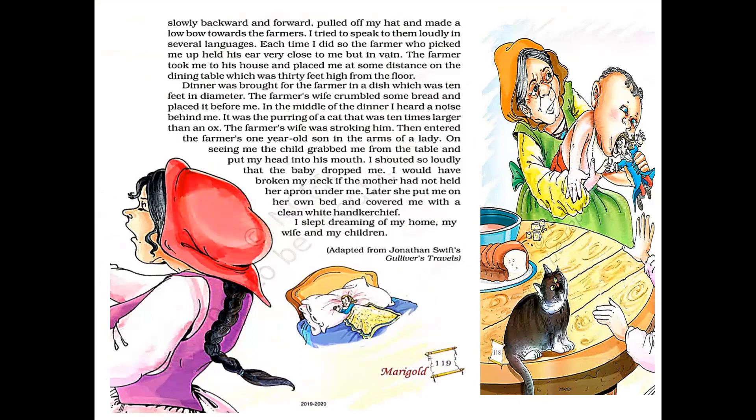Then the dinner was served. The farmer's wife crumbled the bread into pieces and placed it before Gulliver. While he was sitting, he heard a sound of cats. He had a real adventure there. He saw a big cat and also a one-year-old boy who grabbed him and put his head in his mouth. He shouted very loudly.